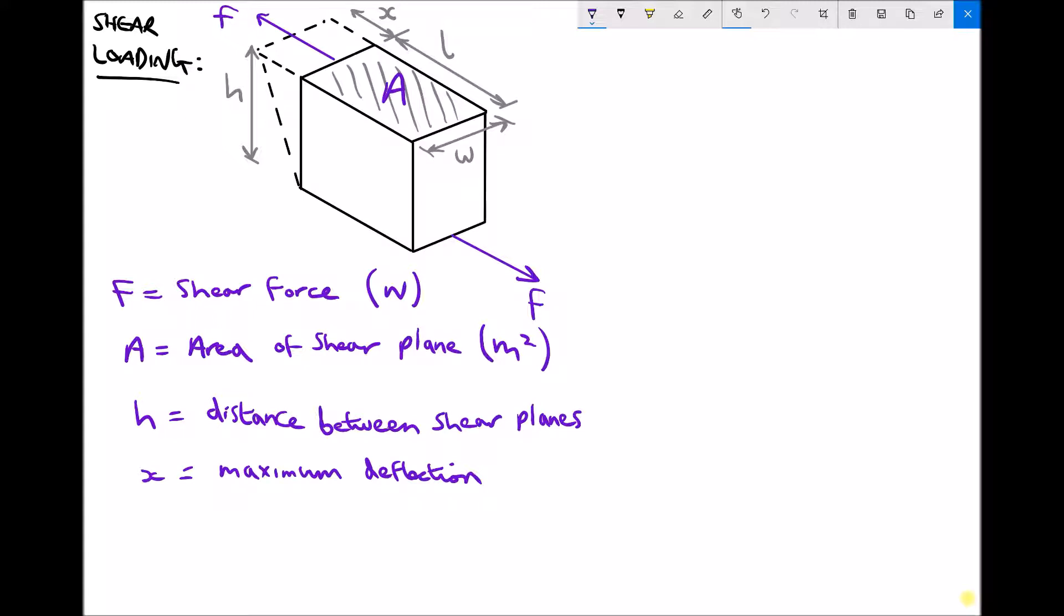In order for a shear deflection to occur, we need a distance h between the two forces. As that shearing action takes place, we end up with a deflection which here we're calling x. The distance between the shear planes must be an SI unit - it's a distance, so it's meters. Our maximum deflection is also a distance, so that will also need to be in meters.